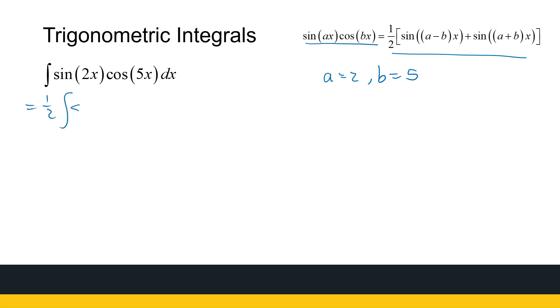I can take the half out the integral of sin(a - b)x. So 2 minus 5 is -3x plus sin(a + b), which is 2 plus 5, so it's 7x dx. There we go.